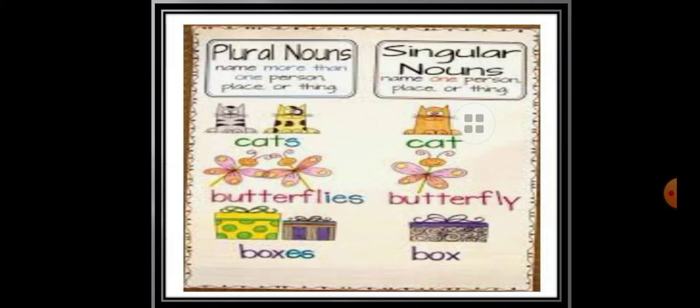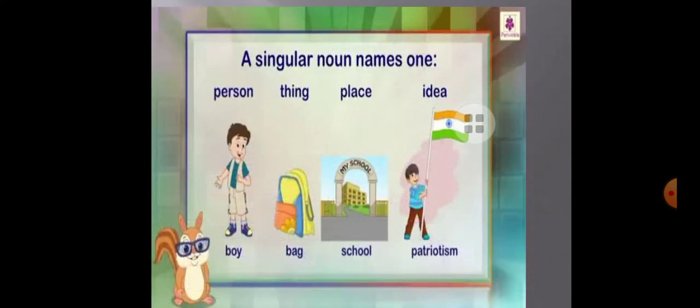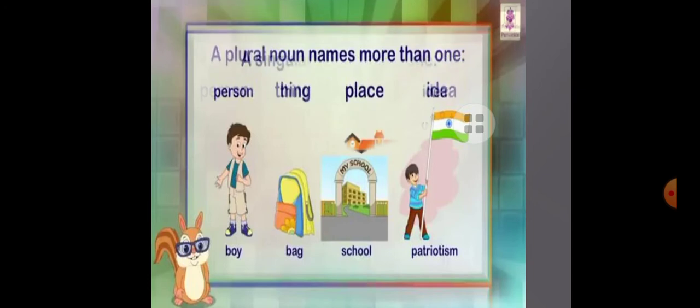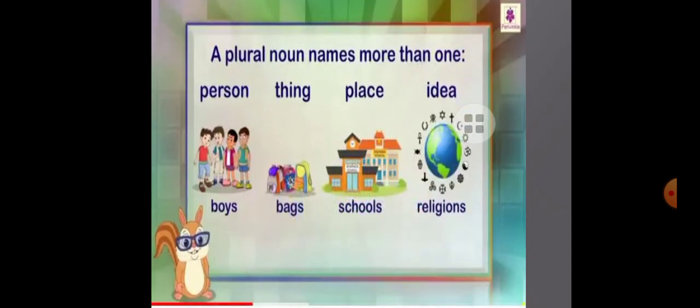So children, singular noun names one person, one thing, one place, or one idea. Like 'boy' — one boy is here. One bag is here, one school is here, and one patriotism is here.